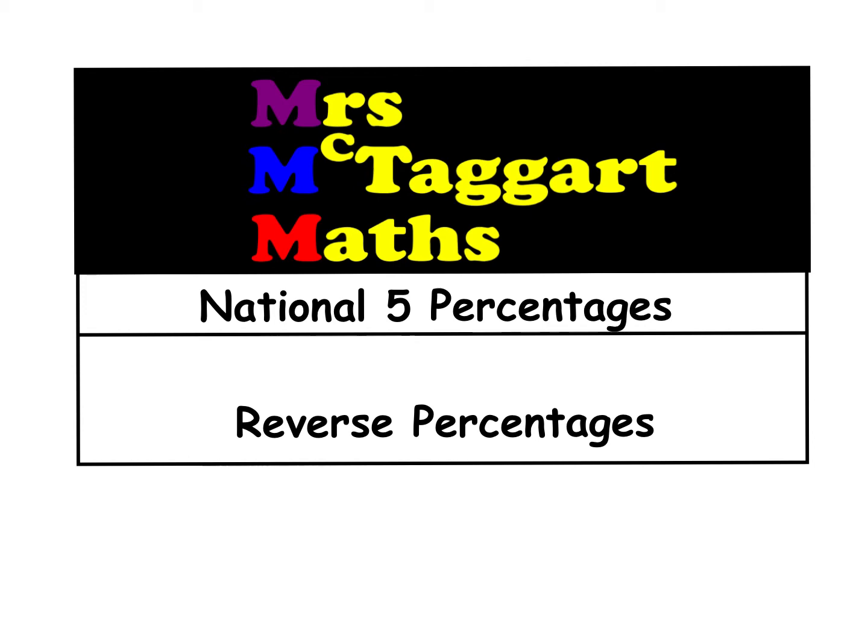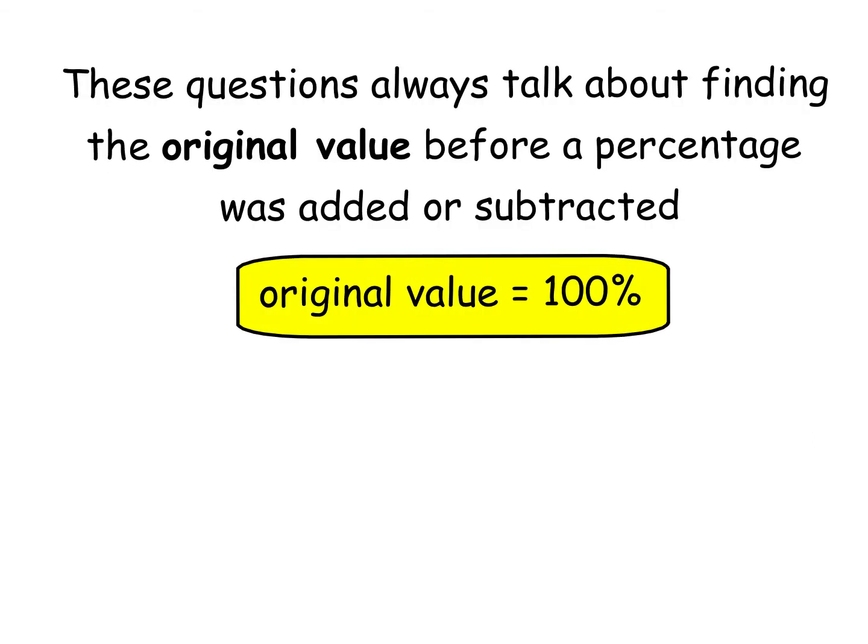I call it reverse percentages for short because the minute I say that, people are like, oh yeah, one of those ones — I get it. These questions always talk about finding the original value, the original cost or the full price of something before a percentage was added or subtracted. It's very important to remember that the original value of an item is always equivalent to 100%. If you pay full price, you're paying 100% of the market value.